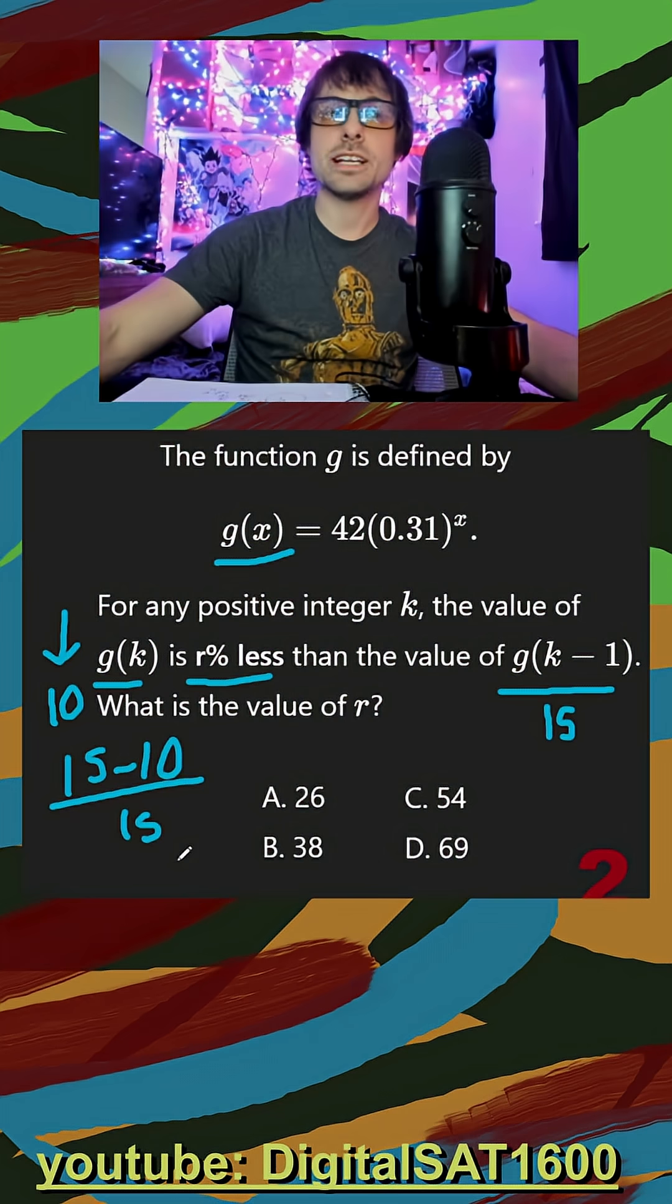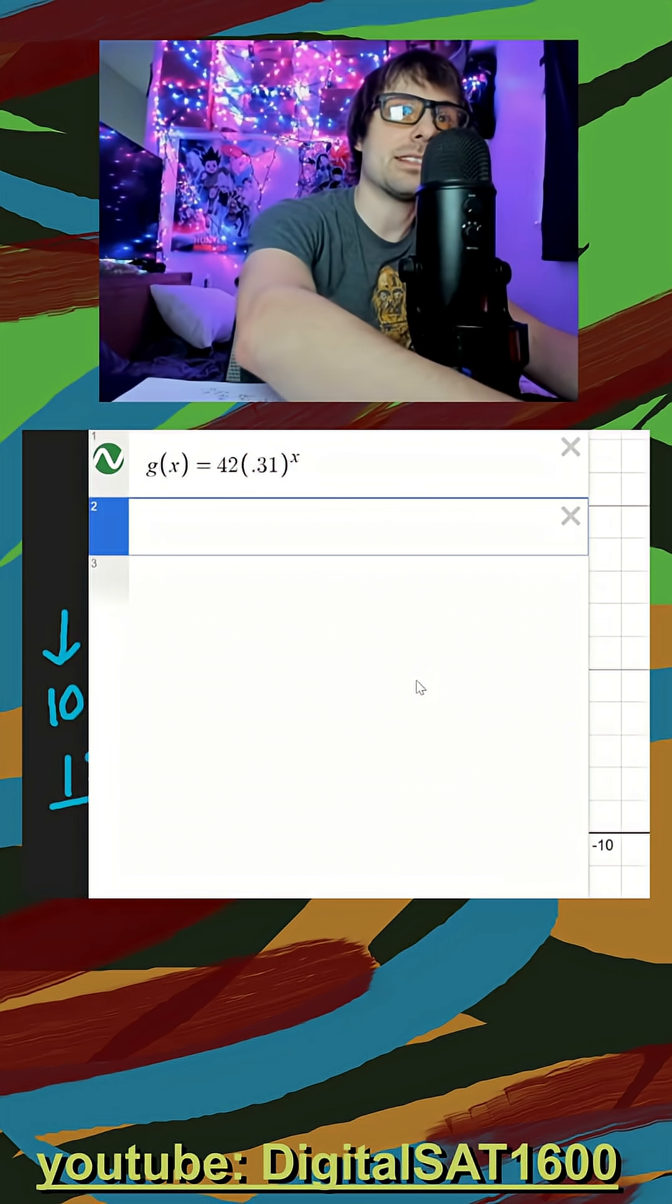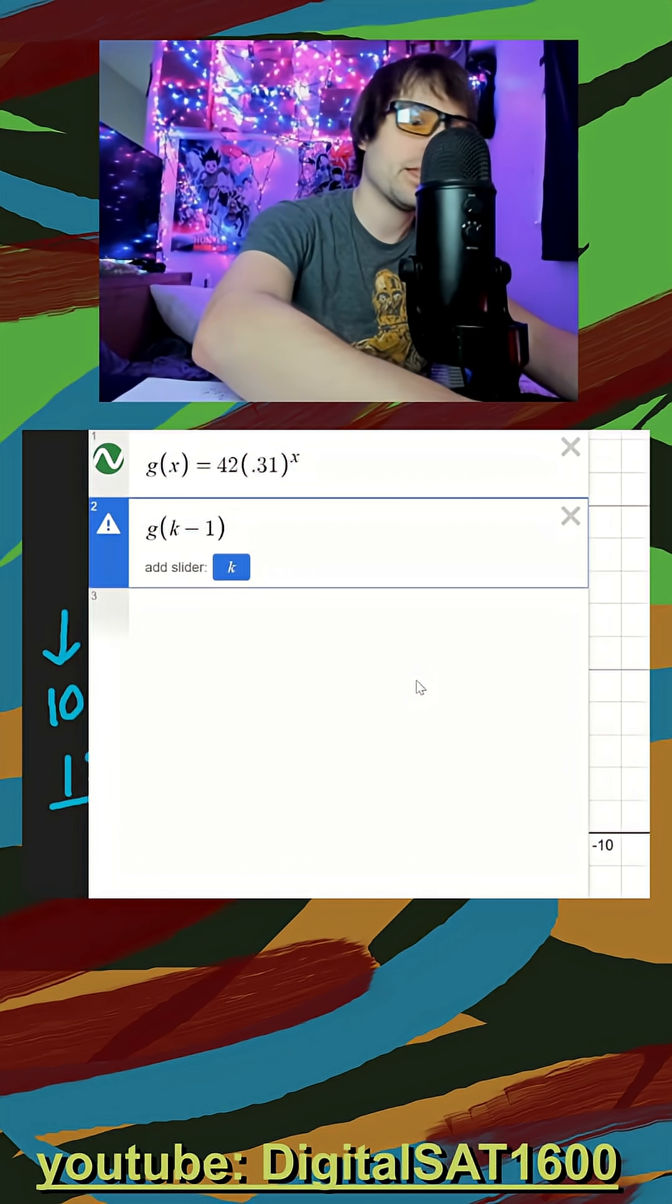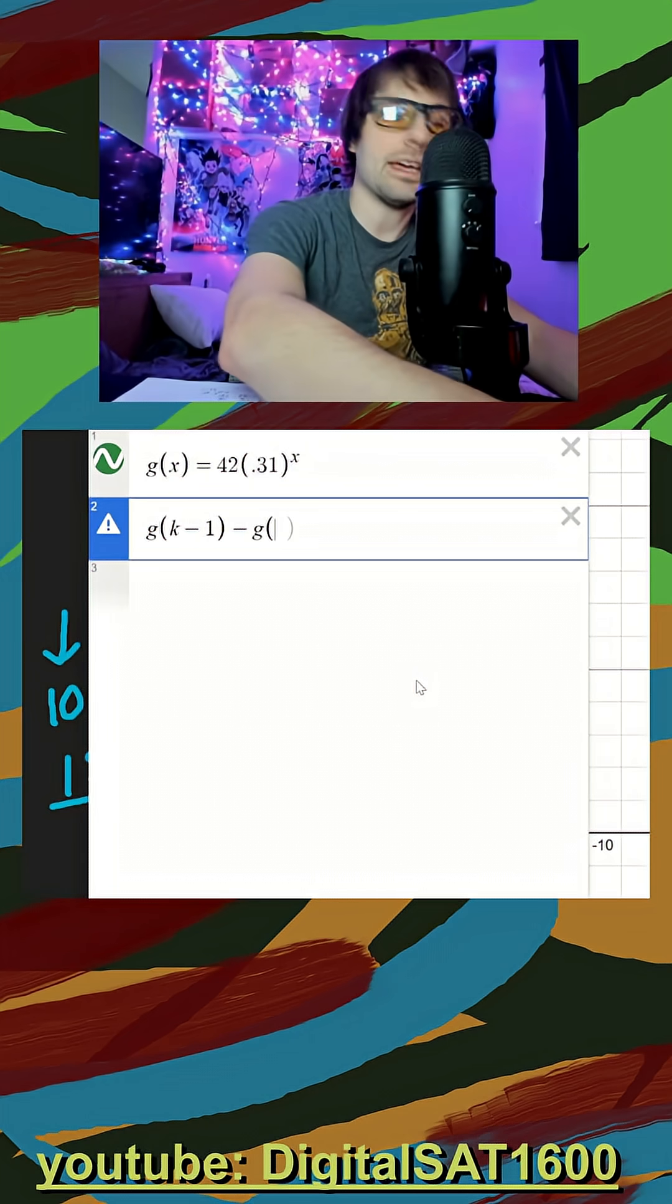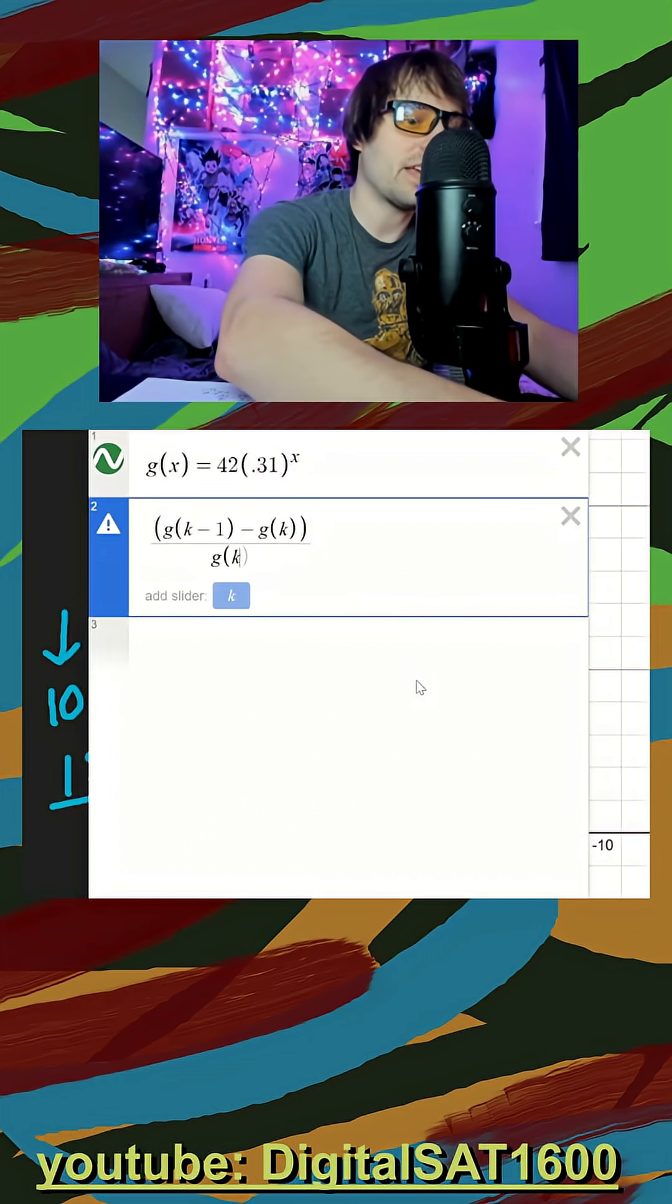And all I have to do on Desmos is copy this exact format. So if we pull Desmos up, I already have my g of x typed in. And then I just replace the 15 and 10 with my two functions. So g of k minus 1 minus the g of k, and then I divide all that by g of k minus 1.